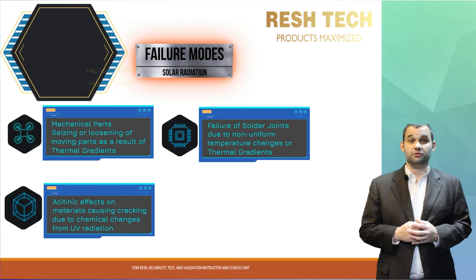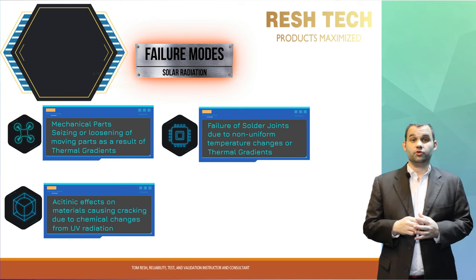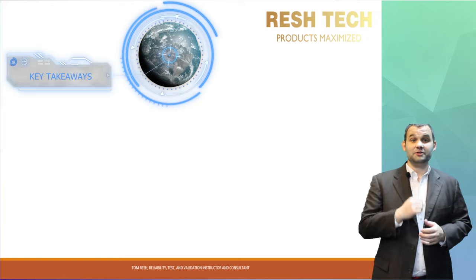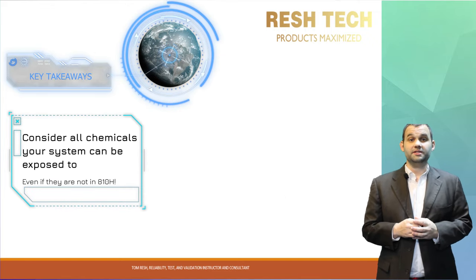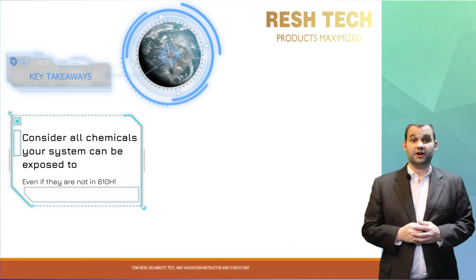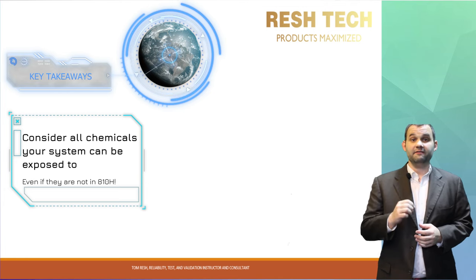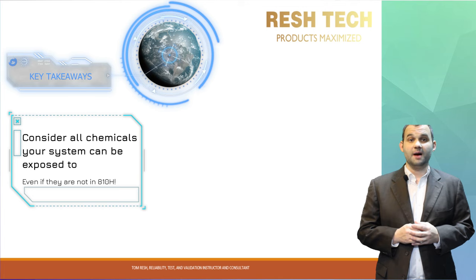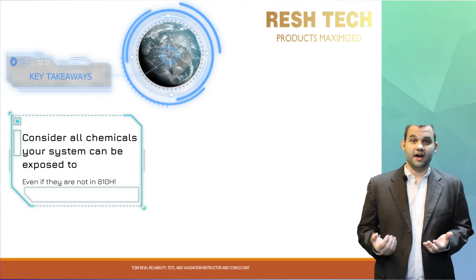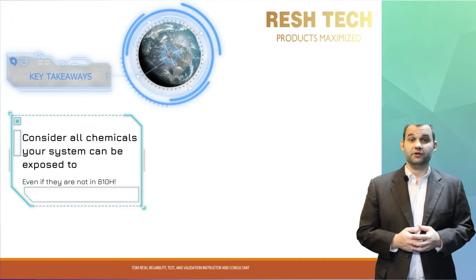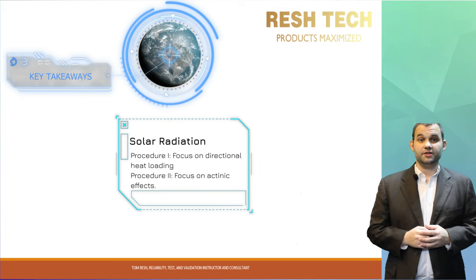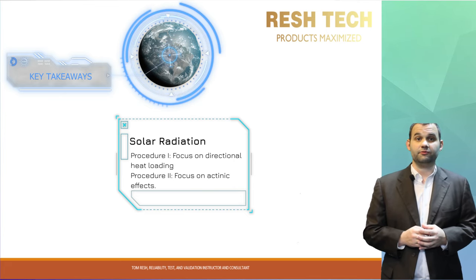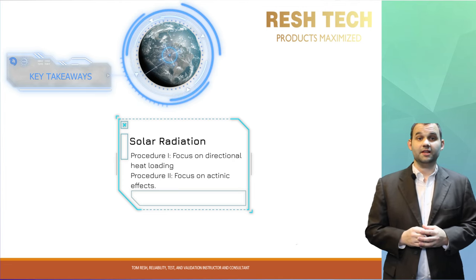The failure modes described for solar radiation and contamination by fluid are just a small list of potential failure modes. You need to create a DFMEA to ensure that you are capturing the potential failure modes for your particular system. Some key takeaways: consider the chemicals and fluids your system could potentially be exposed to, and add chemicals to your environmental test plan that have been identified as a potential exposure hazard, even if they aren't in the chemical list within MIL-STD-810H, since the standard is a guideline and not a procedure you can copy and paste without considering your specific mission profile. The two procedures covered have different intent — Procedure 1 focuses more on heat loading and temperature gradient effects, and Procedure 2 focuses on actinic effects from direct sunlight.